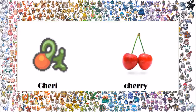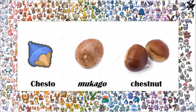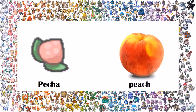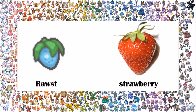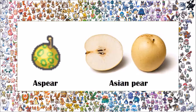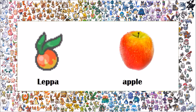The Cheri berry is obviously based on the cherry. The Chesto is based on two things: in Japan it is based on the mukago, which is a sort of yam root, while the English name, Chesto, is obviously based on the chestnut, which is also obvious in its design. The Pecha berry is based on the peach. The Rawst berry is based on the strawberry. The Aspear berry is based on the Asian pear — this is an example of a portmanteau, combining 'as' from Asian and 'pear' to make Aspear. The Leppa berry is based on the apple, which is an anagram of Leppa.